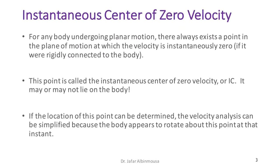The whole story behind the instantaneous center of zero velocity is that for anybody undergoing planar motion, there always exists a point in the plane of the motion at which the velocity is instantaneously zero. It will feel as if the body were instantaneously rotating about one point. This point is called the instantaneous center of zero velocity, or abbreviated as IC. Interestingly, this point may not even lie on the body itself. If its location can be determined, the velocity analysis simplifies because the body appears to rotate about a single point, giving V equals omega times R.